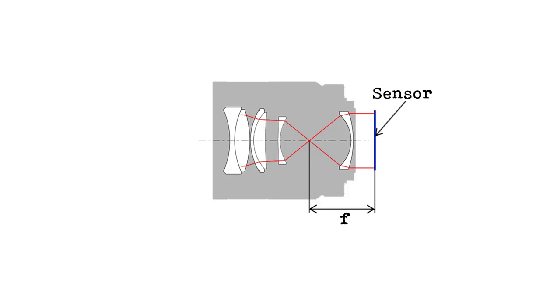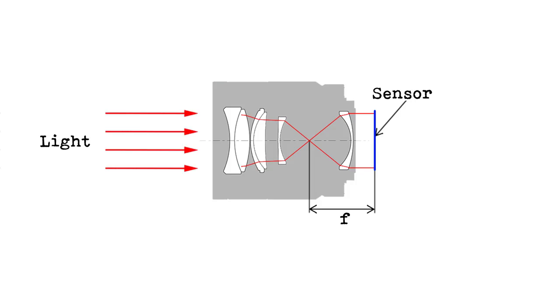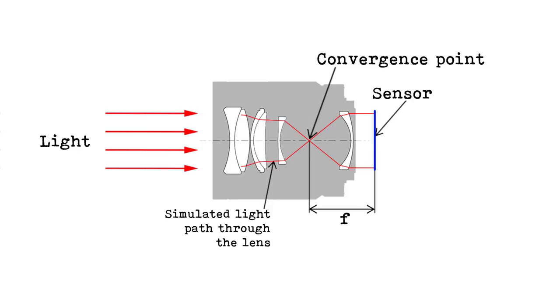In the simplest terms, it's the distance between the convergence point of the light rays and the sensor, or film if you're old school. In this simplified image, the light rays come into the lens, go through a few elements, and then converge — a bit like it would when it travels through your eye — and then it hits the sensor. F is the focal length, which is the distance between the convergence point and the sensor when focused to infinity. As the light travels through this convergence point it flips the image upside down, and then the camera's brains flip it back the other way.